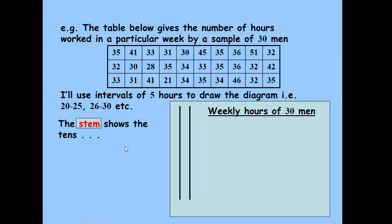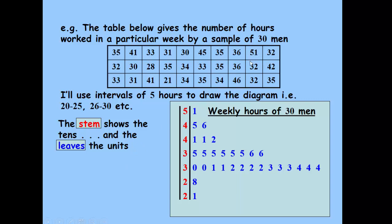The stem are the tens and then the units are the leaves. Here we can see we have one value of 51, that's this value here. We have intervals of 45, 46, 41, 41, 42, and you should be able to pick out those values from here. 46 is 4 tens, 6 units.